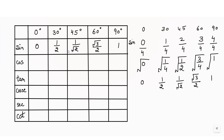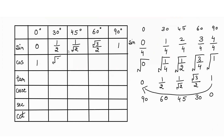For cosine, we will start writing from the back to the front. So the value for cos 0° is 1, for cos 30° it is √3/2, for cos 45° it remains 1/√2, for cos 60° it is 1/2, and for cos 90° it is 0.